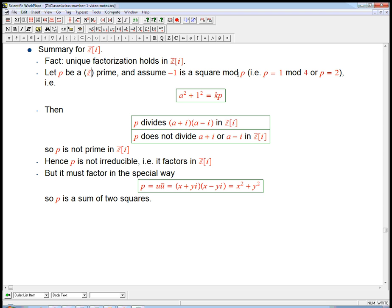and if minus 1 is the square mod p, and the claim is that's just either p equals 2 or p is an odd prime that's 1 mod 4, then a squared plus 1 squared is kp, so that's another way to say that minus 1 is the square mod p.